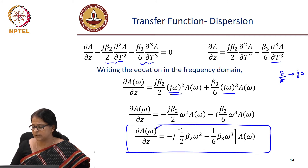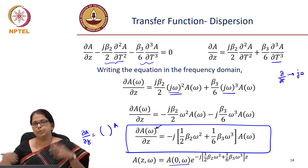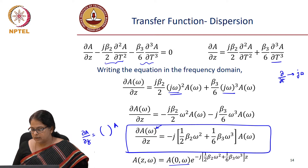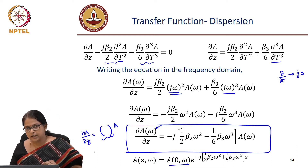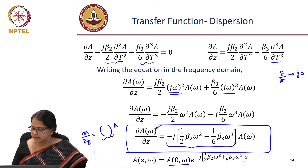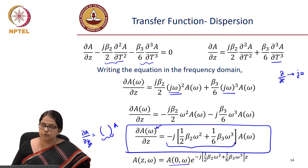This is how each frequency is evolving as a function of space. It is of the form del a by del z equals something times a — this is like an exponential solution. So the solution is very simple: a of z omega equals the initial condition a naught omega times an exponential, where the rate is minus j times one-half beta 2 omega squared plus one-sixth beta 3 omega cubed.